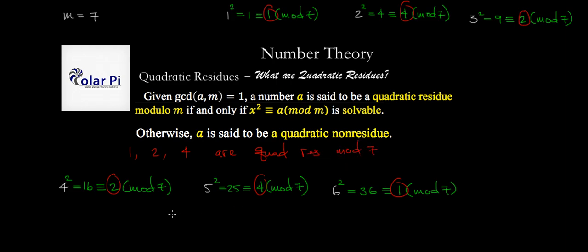And therefore, the numbers 3, 5, and 6 are quadratic non-residues mod 7.